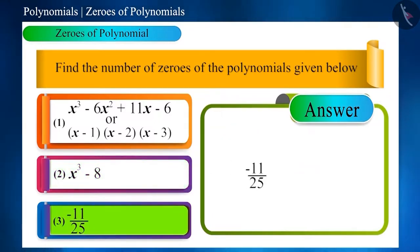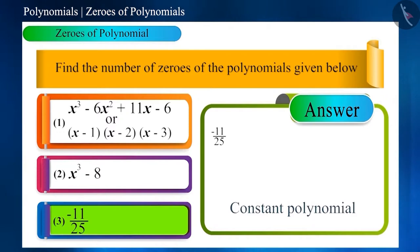Now, let us take the last option, -11/25. Is it a polynomial? This is a constant polynomial, which can be written where the highest power of the variable is 0.